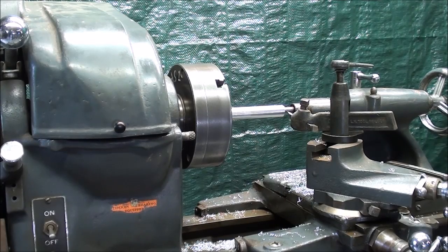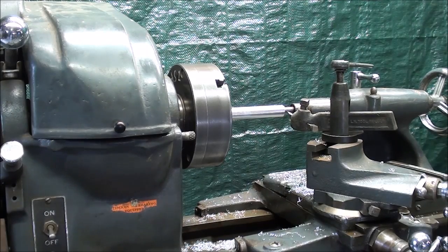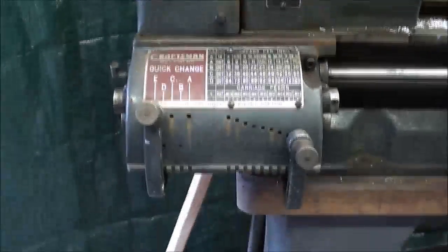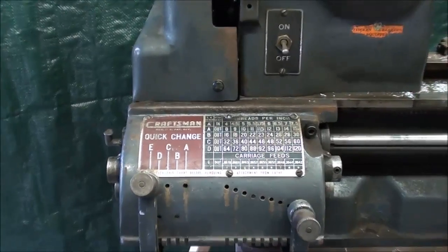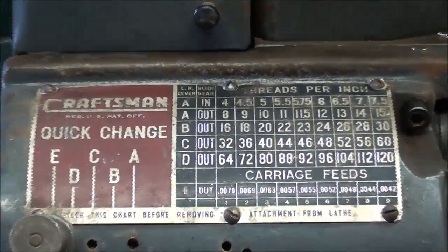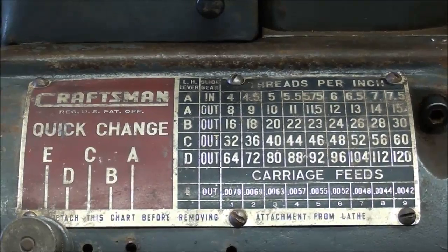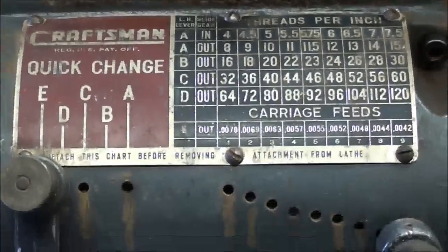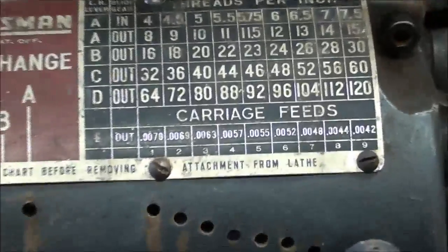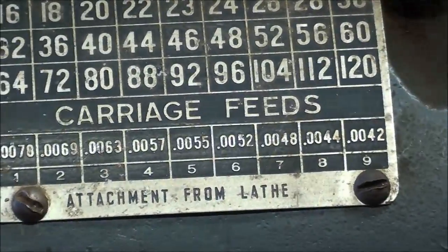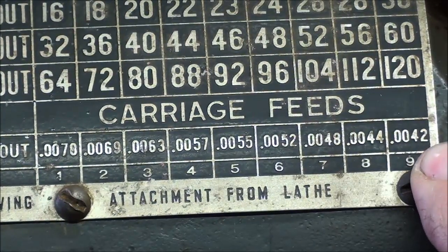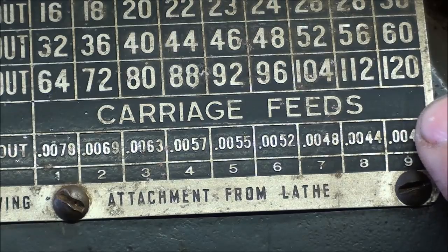This one is a critique on the feed rate of the Atlas 12-inch lathe. I have been a critic for many years of the feed rates on these Atlas Lathes with quick-change gearboxes, because the carriage feeds are very coarse feeds if you want a good finish. The coarsest, or the finest feed here, is 42 ten-thousandths, or let's just call it four-thousandths.